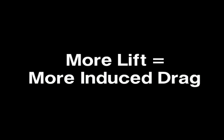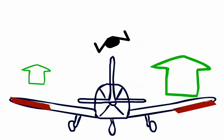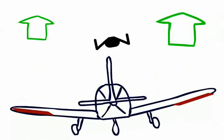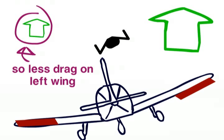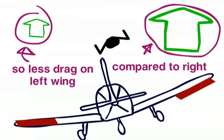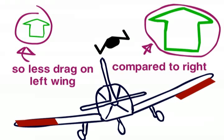As you will remember from episode 5, roll is achieved by increasing the lift on one of the wings and reducing the lift on the other. When rolling to the left, there is less lift on the left wing, which means there is less induced drag on this wing when compared to the right.